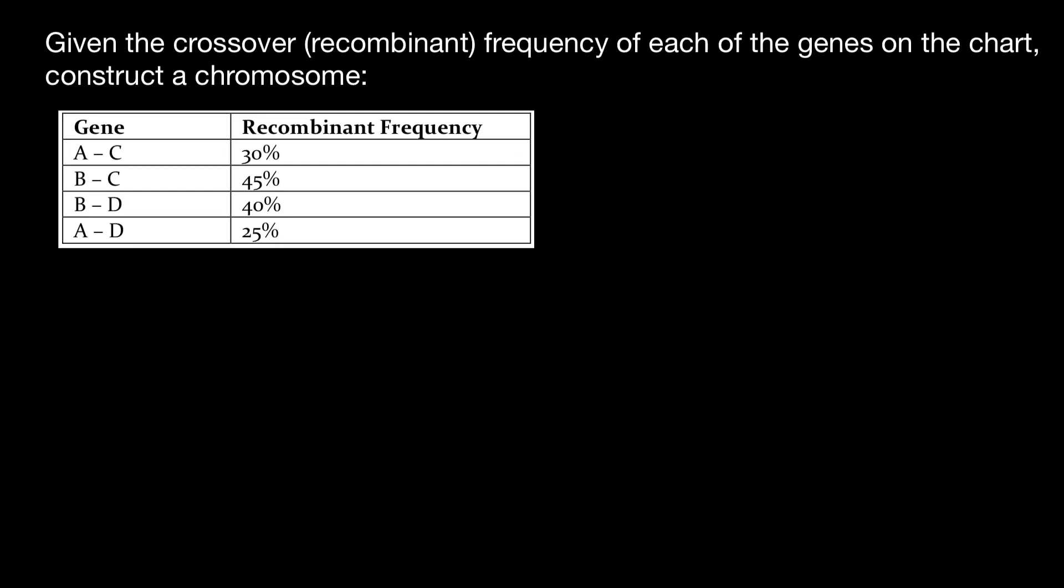So first, let me read the problem. Given the crossover or recombinant frequency of each of the genes on the chart, construct a chromosome, or we have to construct order of the genes on the chromosome. But first, let me give you some theory.